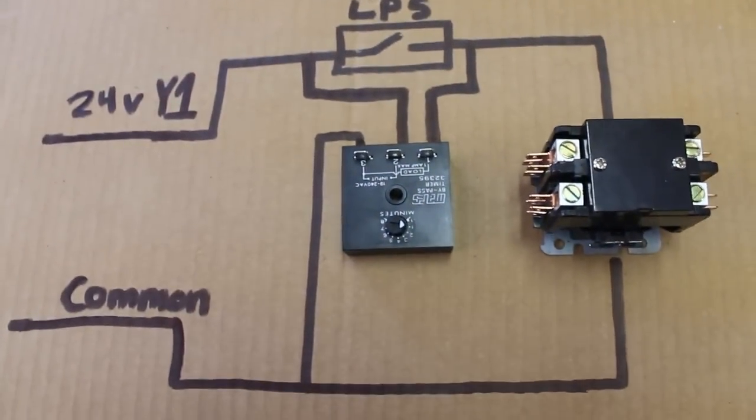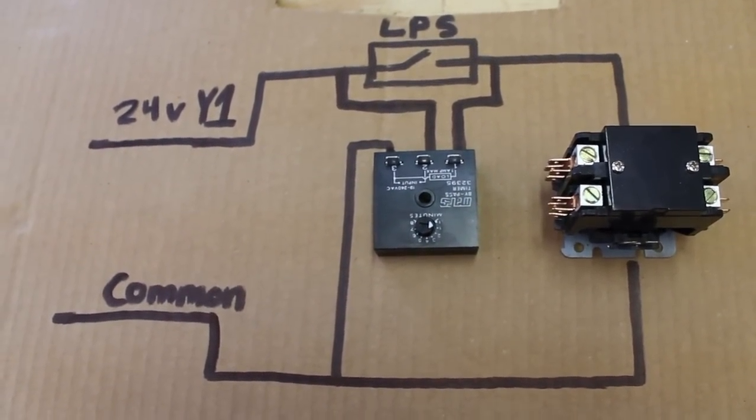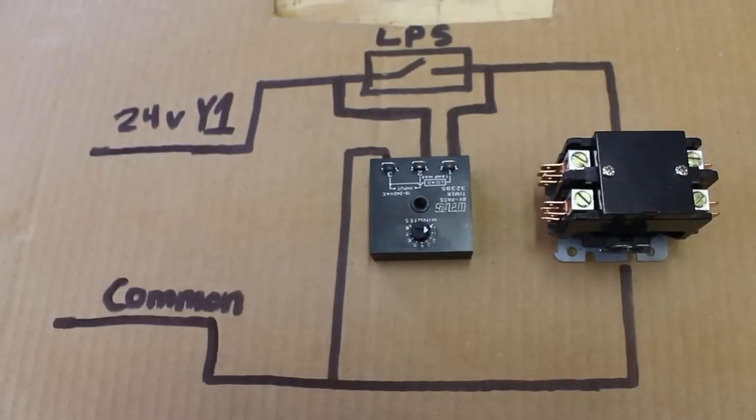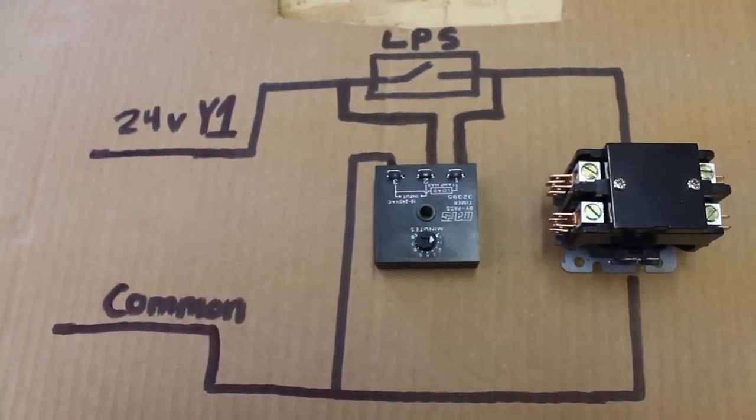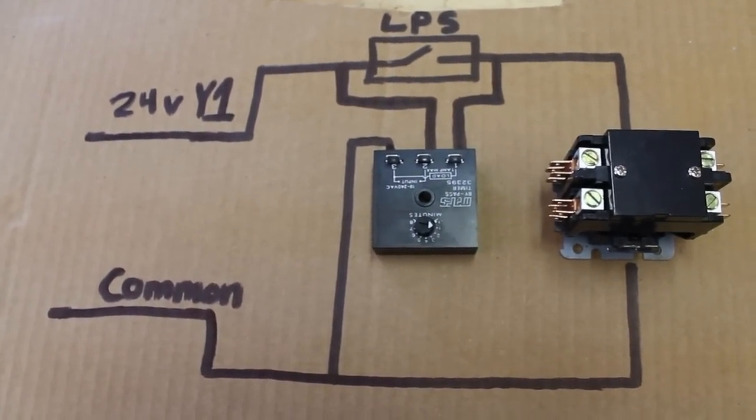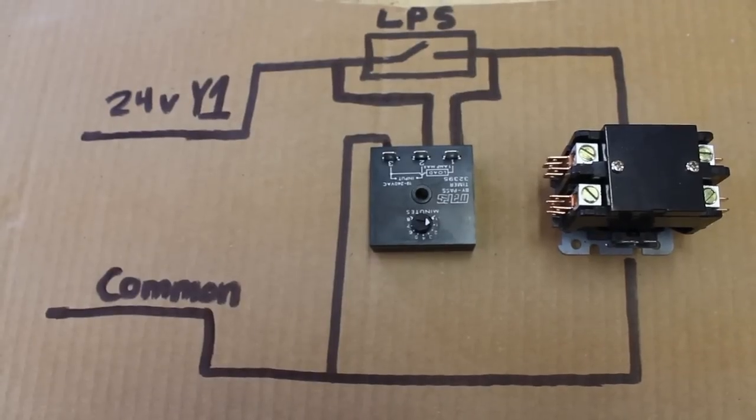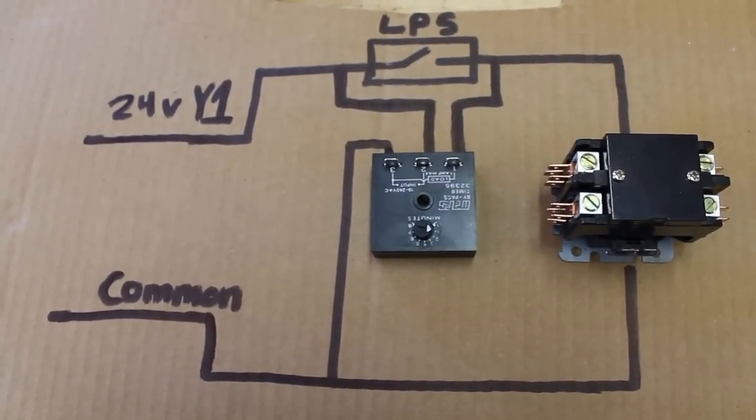So we have a time period where voltage can flow from Y1 all the way to the contactor uninterrupted by the low pressure switch. After that time period of six seconds to eight minutes, it will then be at the liberty of the switch. That is how the bypass timer is wired in and one application you can use it for in air conditioning.